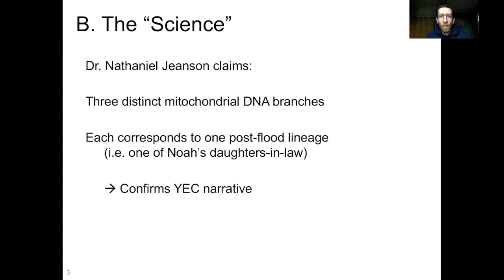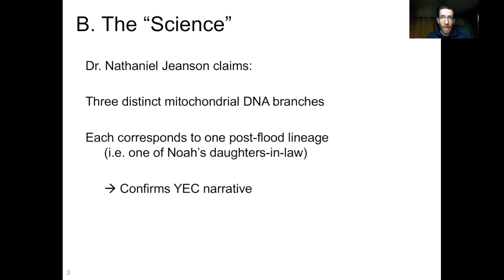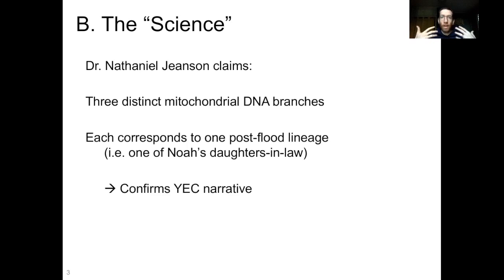So the science behind this — we can look at Dr. Nathaniel Jeanssen's claims on this issue, because he's actually plotted out phylogenies of human mitochondrial DNA, and he claims to have identified three distinct mitochondrial DNA branches, where each branch, or the common ancestor of each branch, corresponds to one of Noah's daughters-in-law. He claims that this confirms, or is at least evidence for, the YEC narrative. So if you have a mitochondrial phylogeny and you could identify three distinct nodes, then you could say those are the three daughters-in-law, and that is consistent with the YEC narrative.